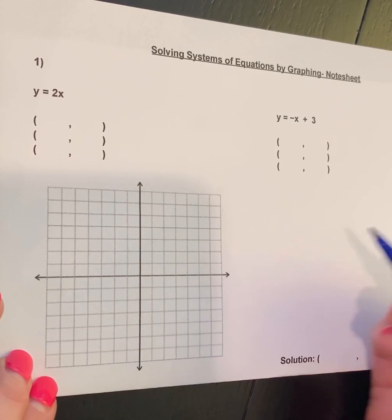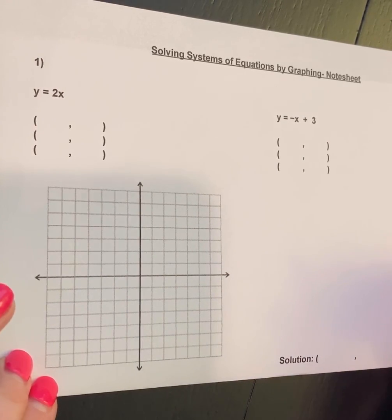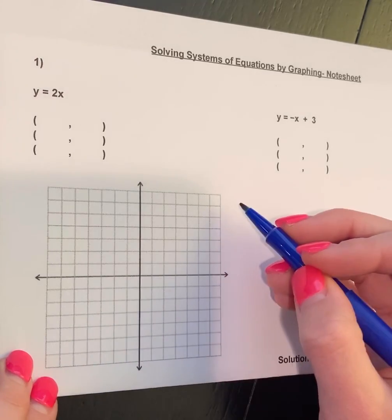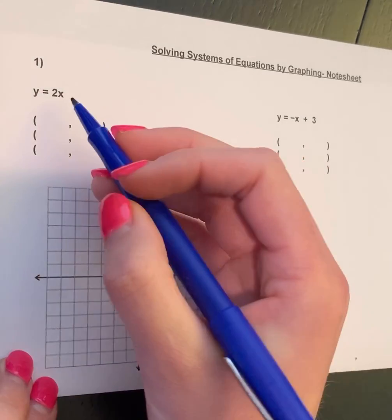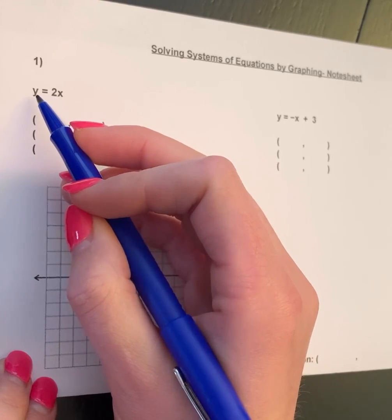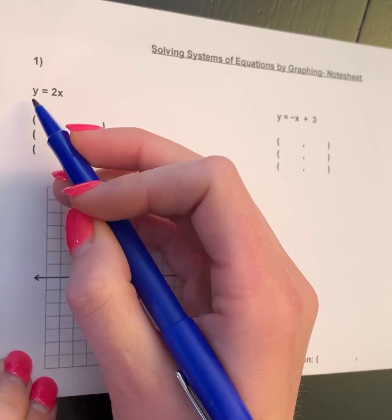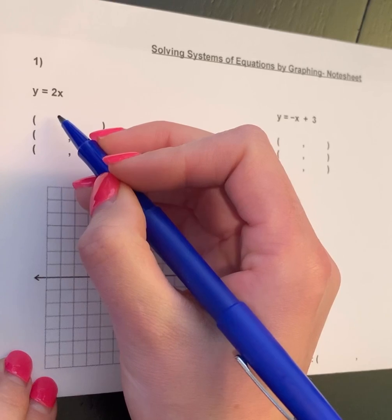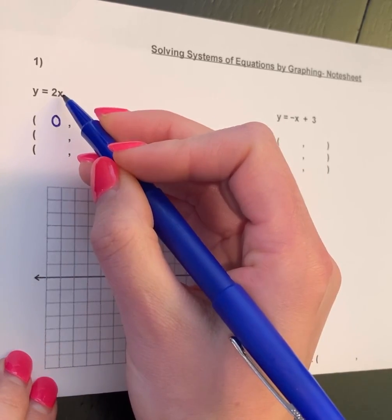I can just draw my line right through them. What I mean by that is I need to find points that satisfy the equation for x and y. For example, if I put 0 in for my x value, what does y end up being in this case?